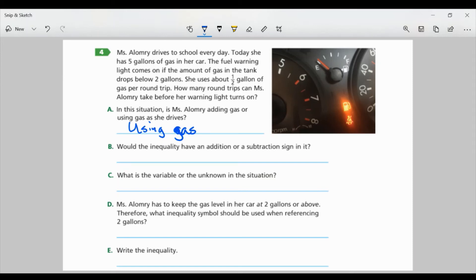Part B. Would the inequality have an addition or a subtraction sign in it? Well, since we are using gas, it's going to be subtraction. And I'll put a subtraction sign. Part C. What is the variable or the unknown in this situation? Well, what we don't know is the number of round trips she can take.